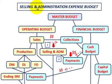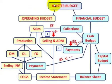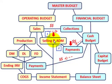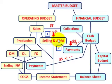We're going to be going over the selling and administrative expense budget — just a basic setup. Under our master budget we have our operating budget and our financial budget. The selling and administrative expense budget falls under our sales area, so the first thing we do in the operating budget is develop our sales budget. Once we develop our sales budget, we can determine our selling and administrative expense budget.